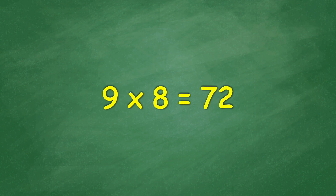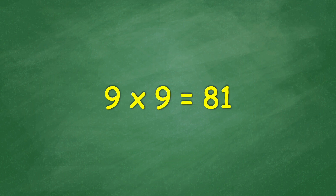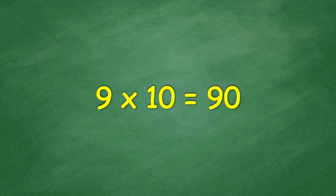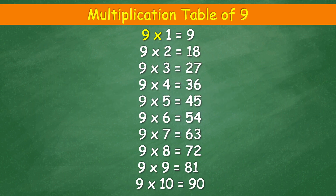9 x 8 equal 72, 9 x 9 equal 81, 9 x 10 equal 90. 9 x 1 equal 9, 9 x 2 equal 18, 9 x 3 equal 27, 9 x 4 equal 36, 9 x 5 equal 45, 9 x 6 equal 54, 9 x 7 equal 63, 9 x 8 equal 72, 9 x 9 equal 81, 9 x 10 equal 90.